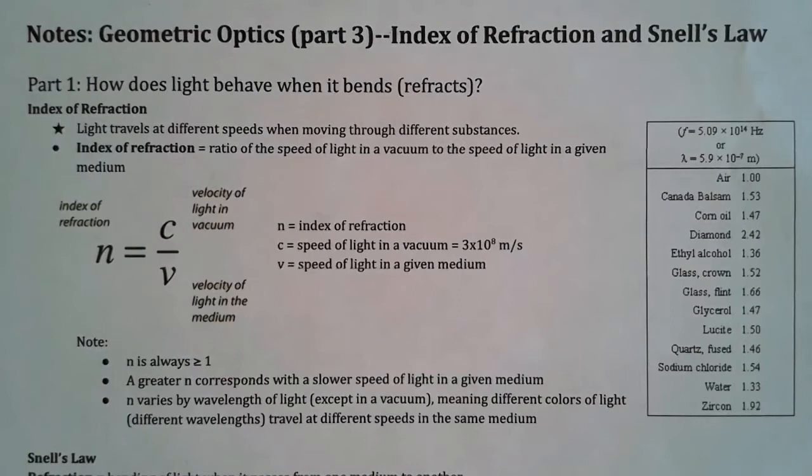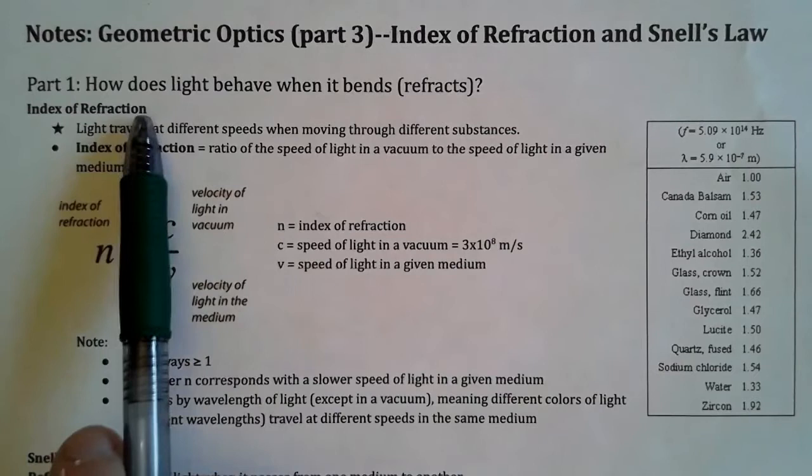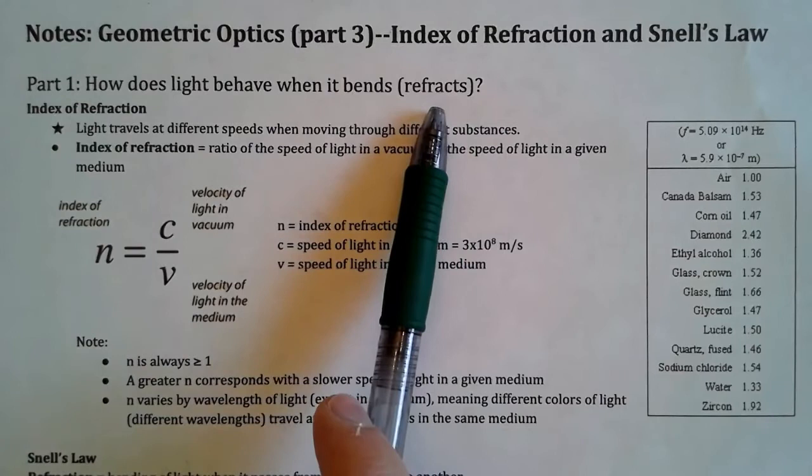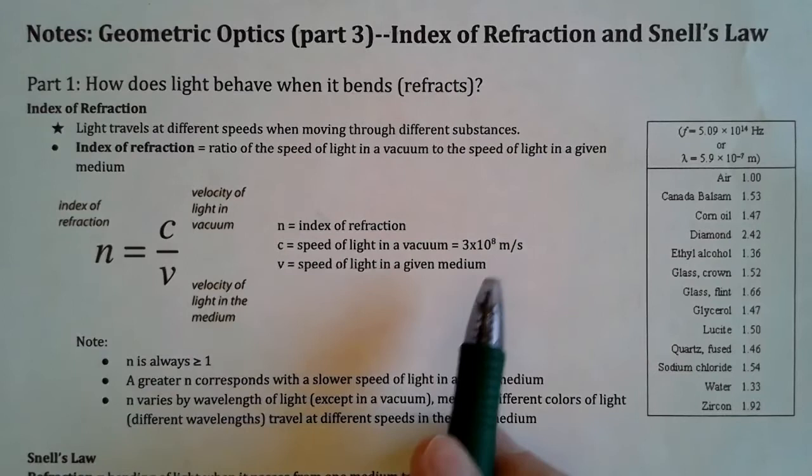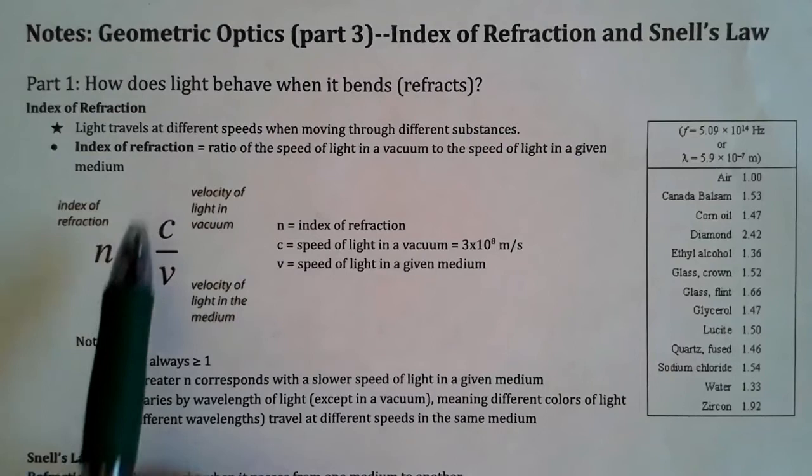Hey everyone, good to have you back. Today we're going to talk about Snell's law and refraction. So first we're going to start by looking at this question: how does light behave when it bends? We call that refraction — that's just the bending of light when it goes from one material into another. That's the type of thing you see when things look distorted if you see them underwater, through glass, or through a fish tank.